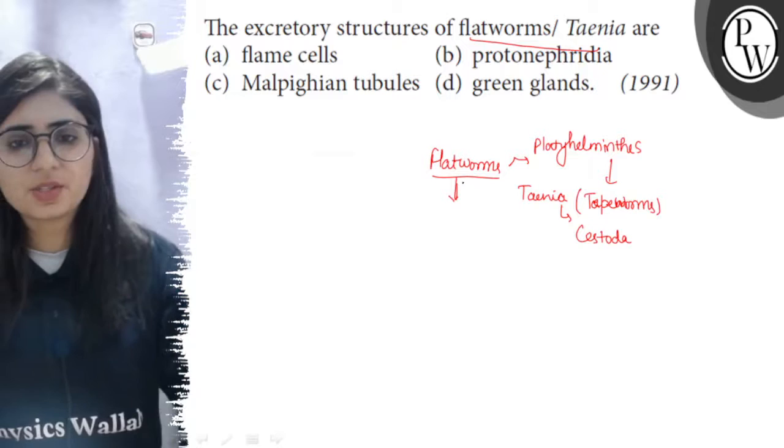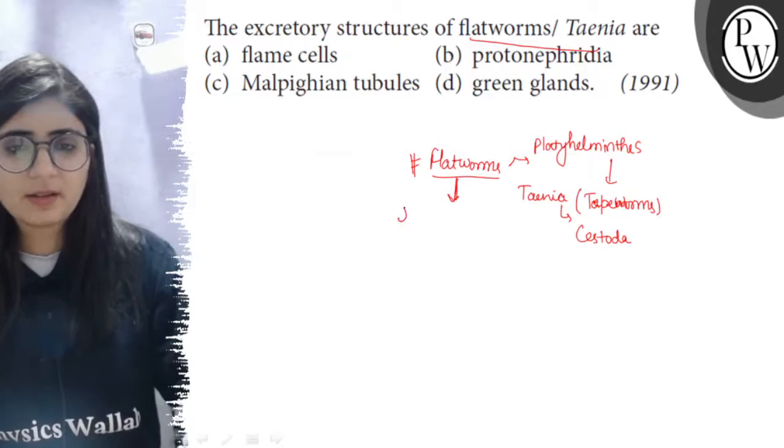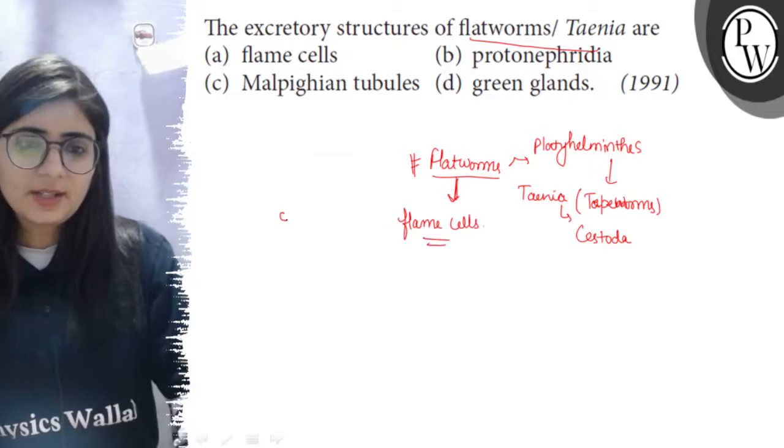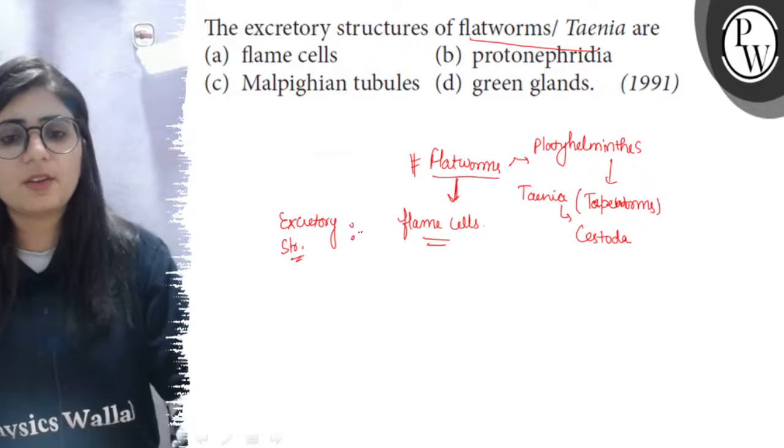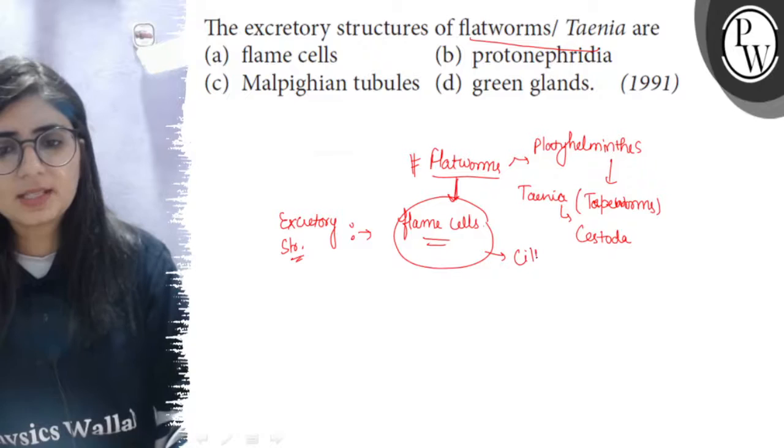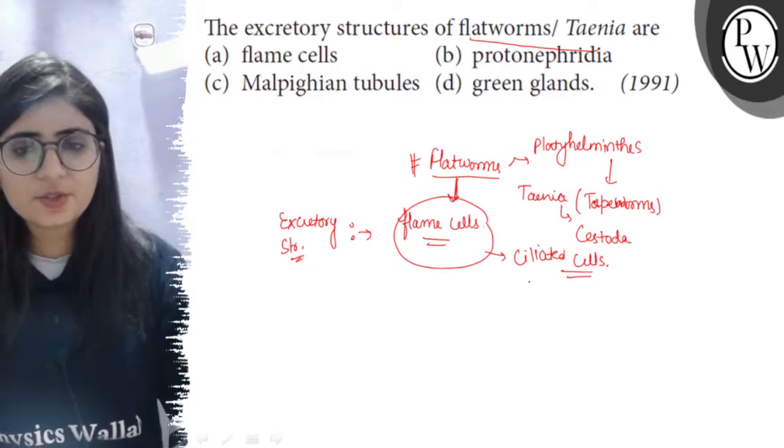Now in case of flatworms, the first time structure for excretion arose in flatworms and the structures present here are known as the flame cells. So excretion is the removal of metabolic waste. Excretion occurs in flatworms with the help of specialized cells called as flame cells. These are ciliated cells.